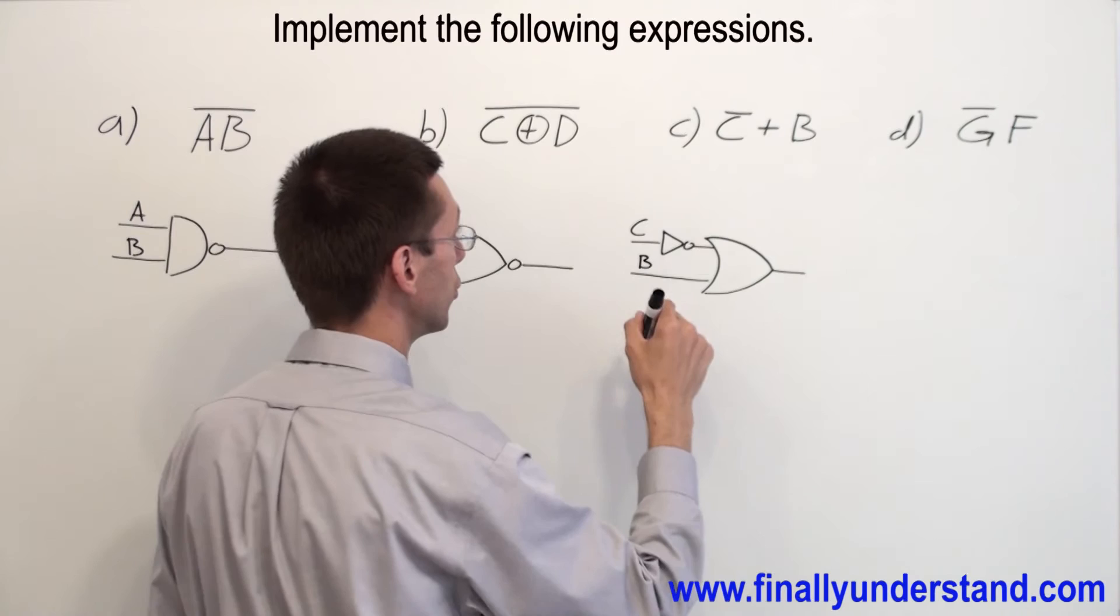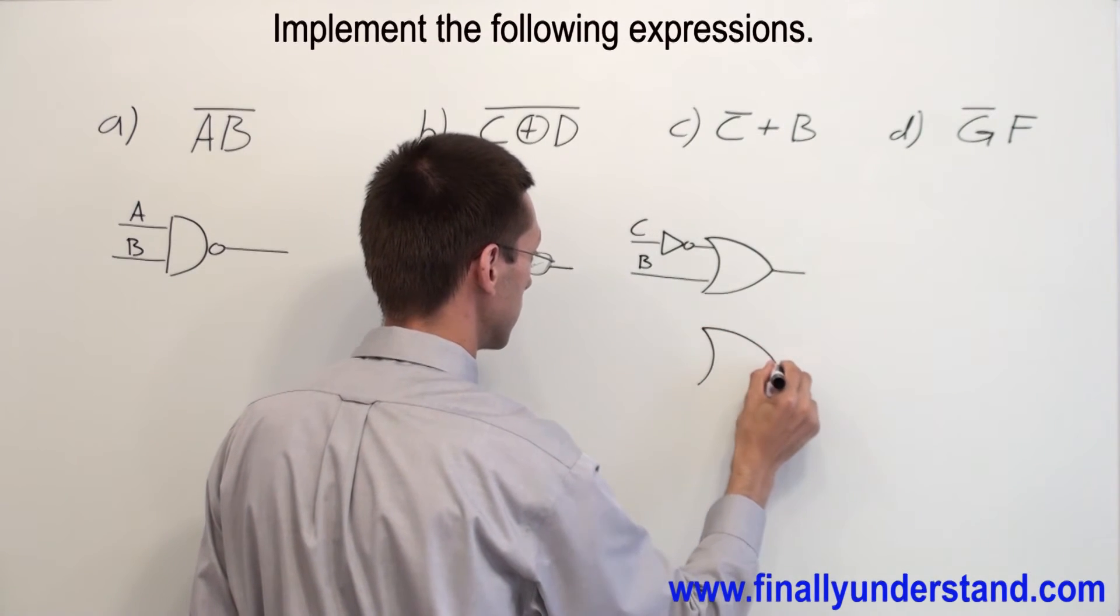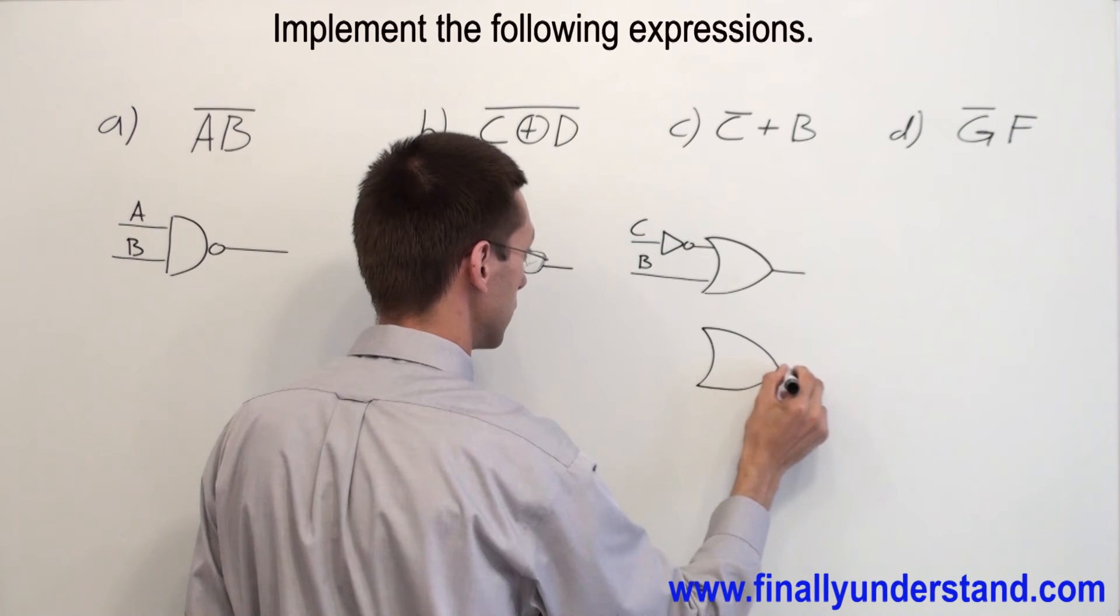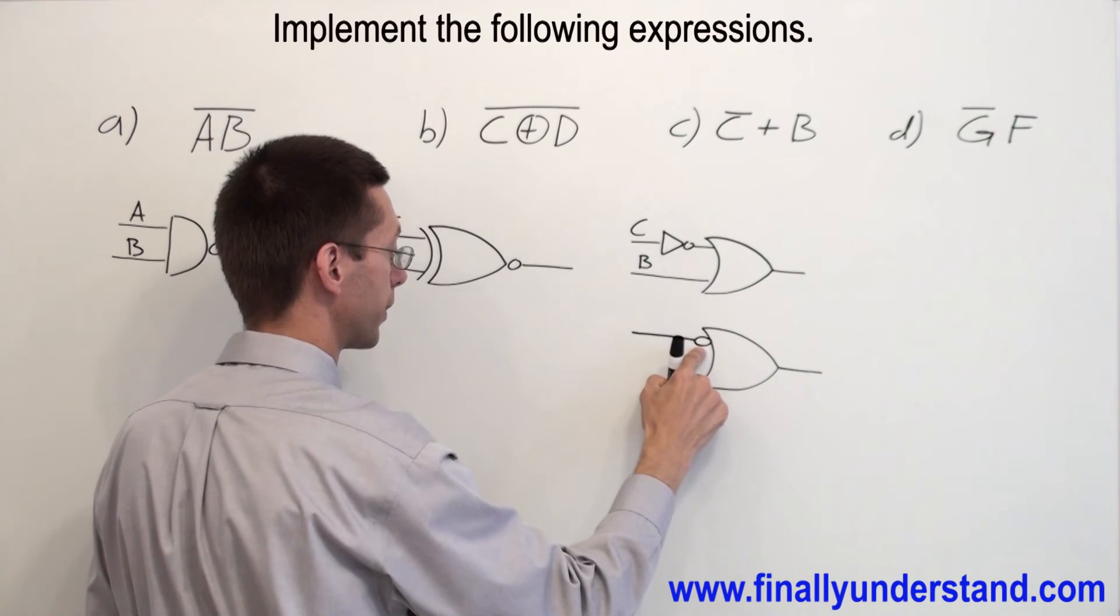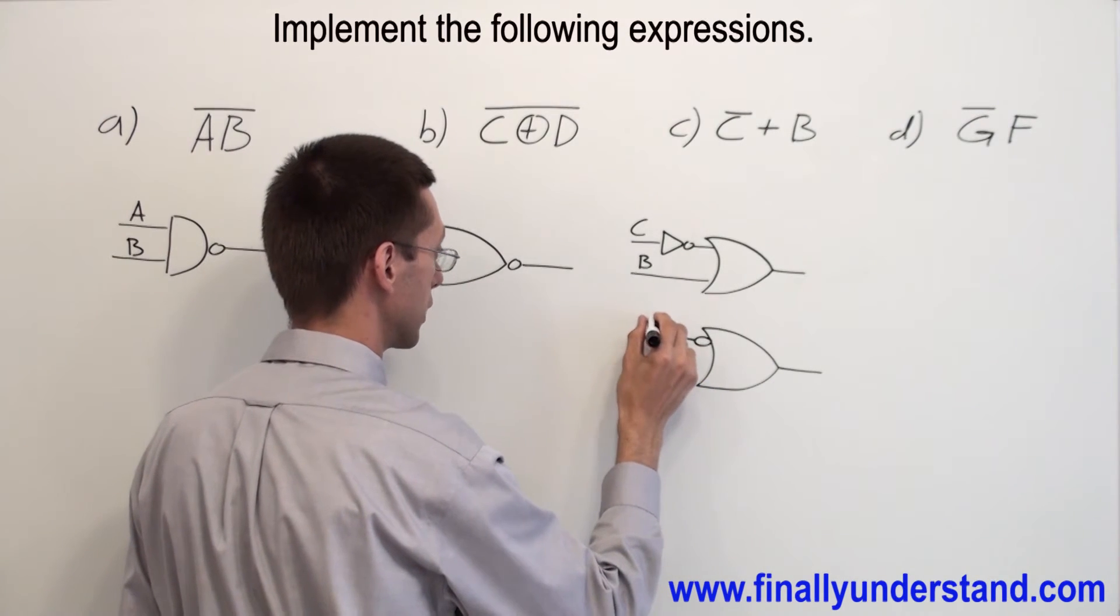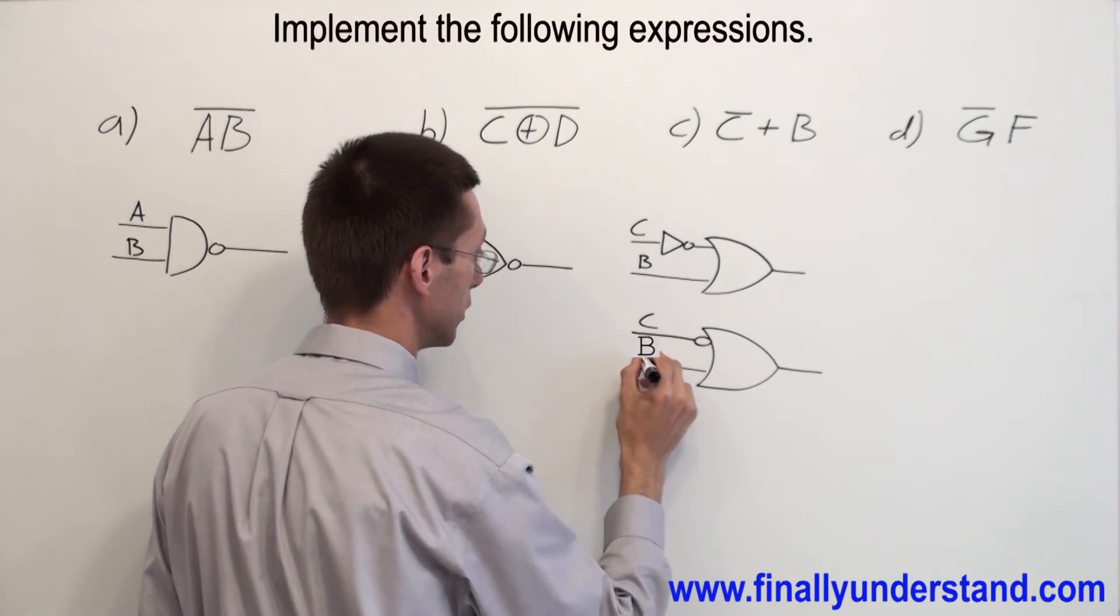You can also draw this function like this, where this bubble also represents the inverter. So I have C and this is D.